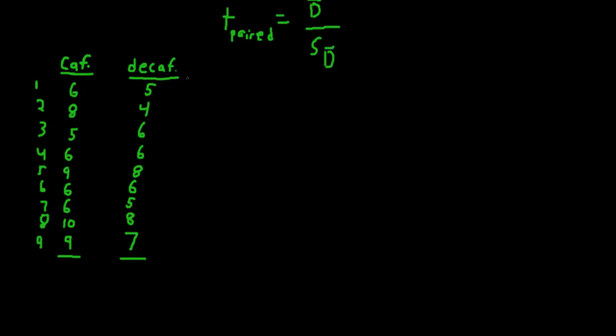So we can start off by calculating the difference scores in order to get the average difference. The difference scores we'll get by simply subtracting the decaf condition from the caffeinated condition. So that'll be 1, 4, and so on.